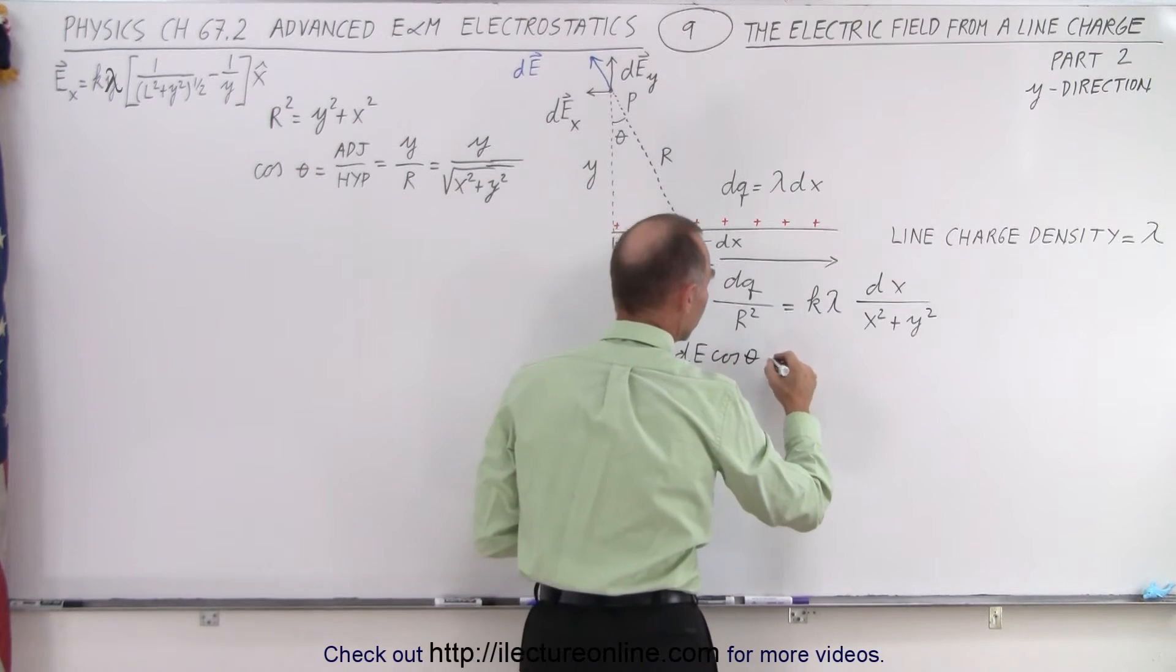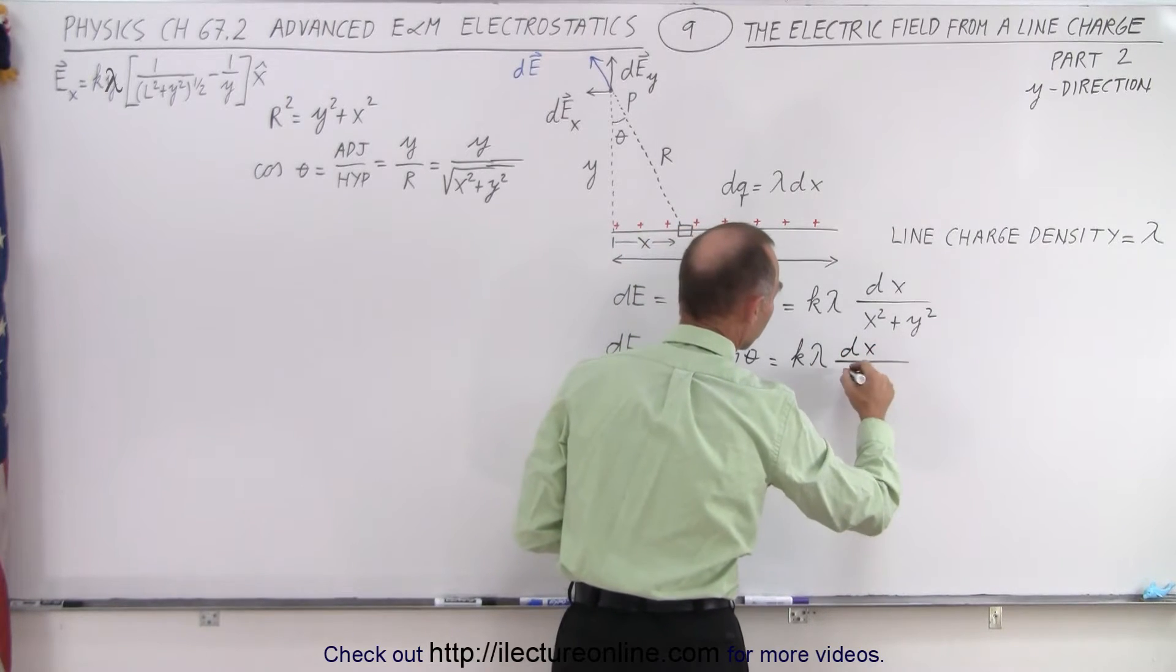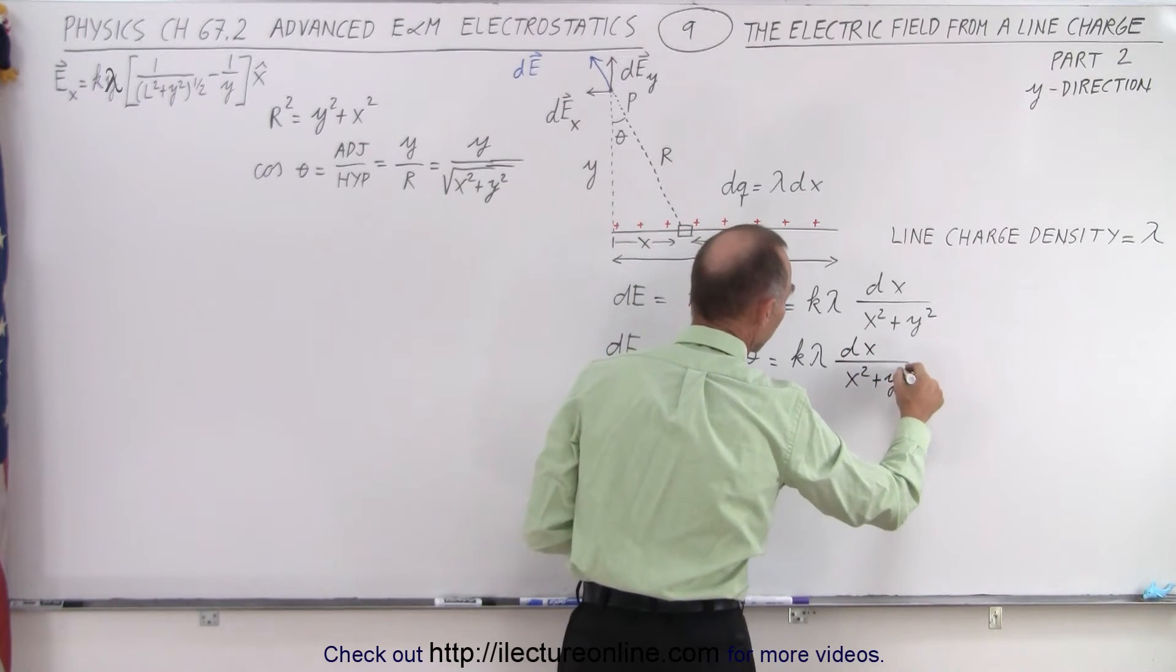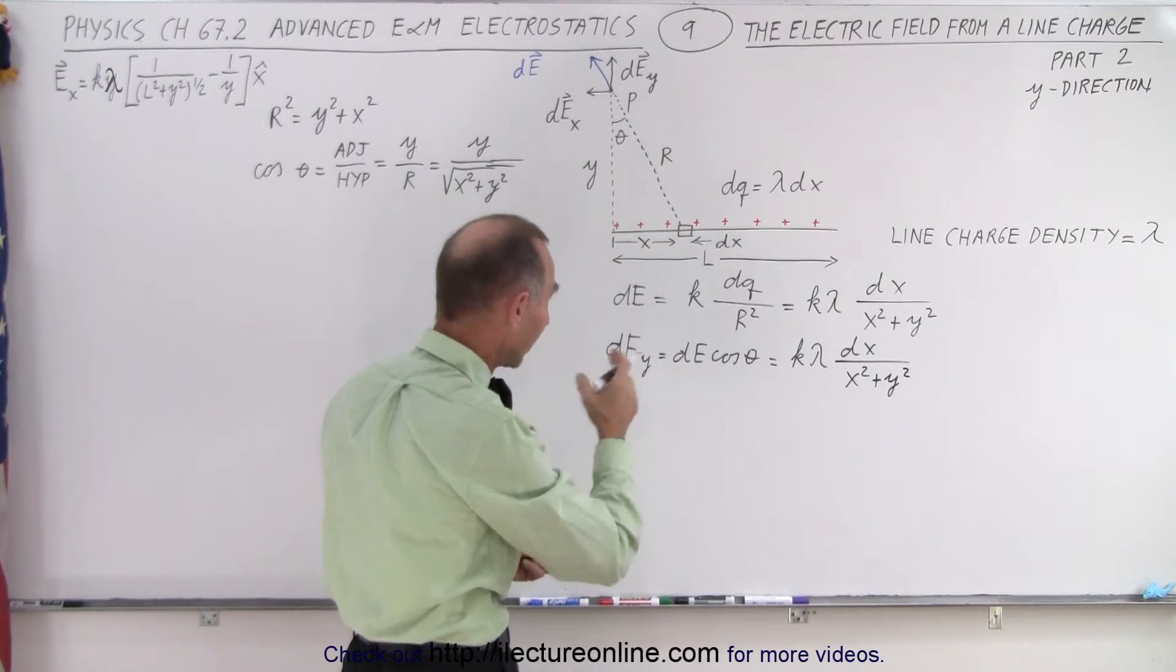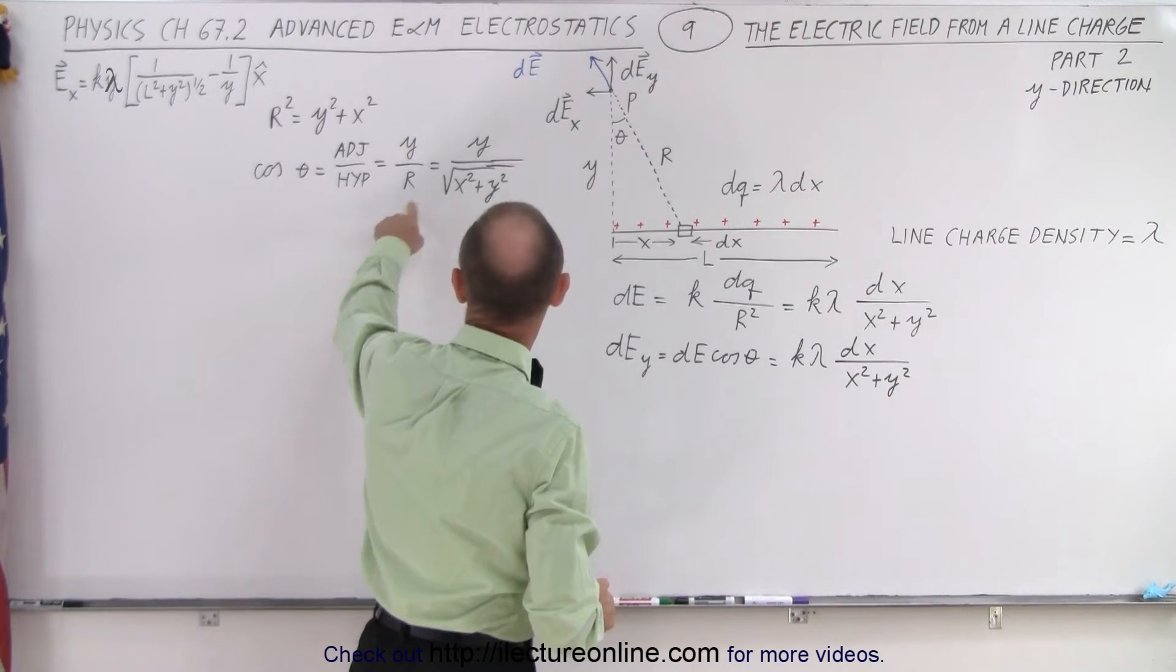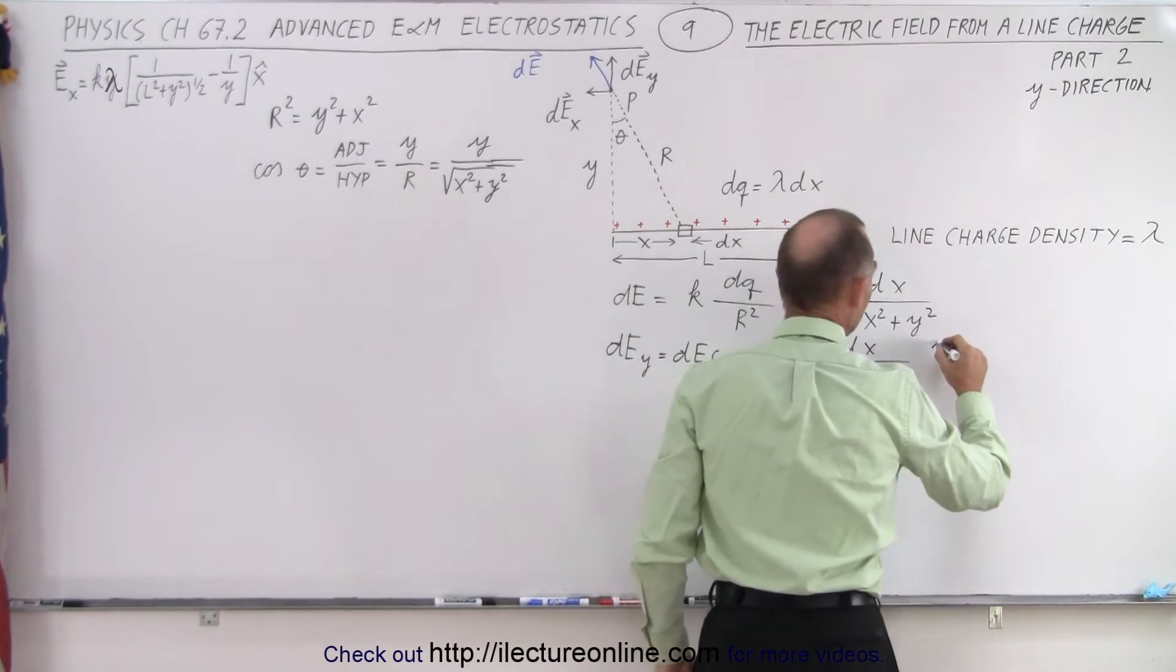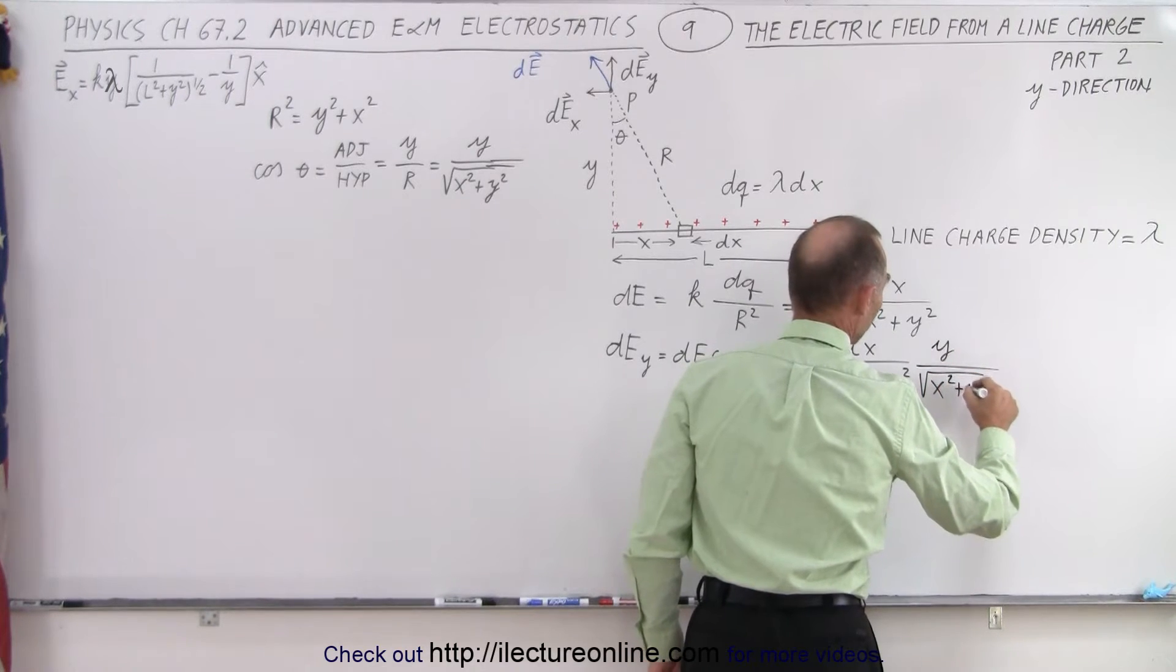dE is equal to k lambda dx over x squared plus y squared. Keep in mind that in this case y is constant, only x varies from 0 to L. And now we want the cosine of theta which is equal to y divided by the square root of x squared plus y squared.